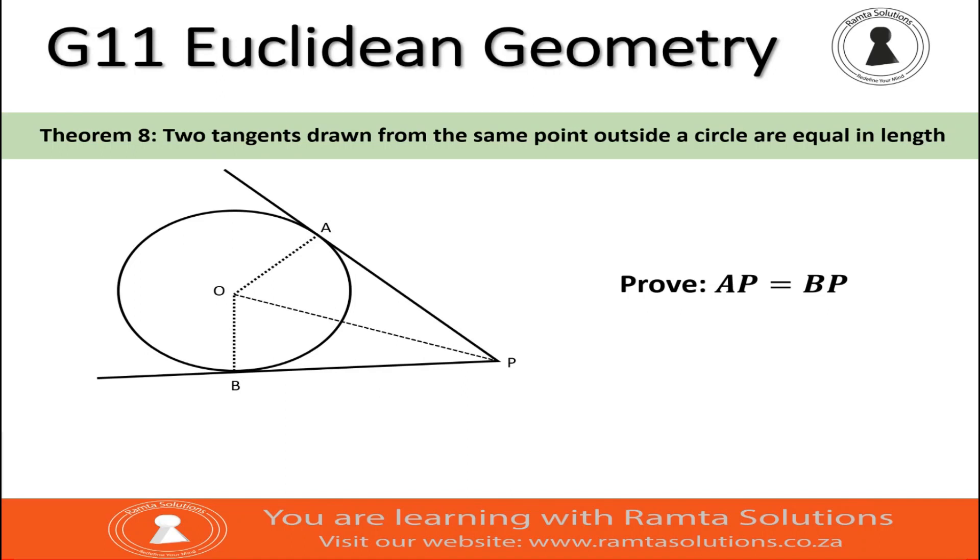Hello, guys. Welcome to Ramta Solutions. Today, as we continue with your grade 11 Euclidean geometry, we are looking at theorem 8, which says two tangents drawn from the same point outside a circle are equal in length.